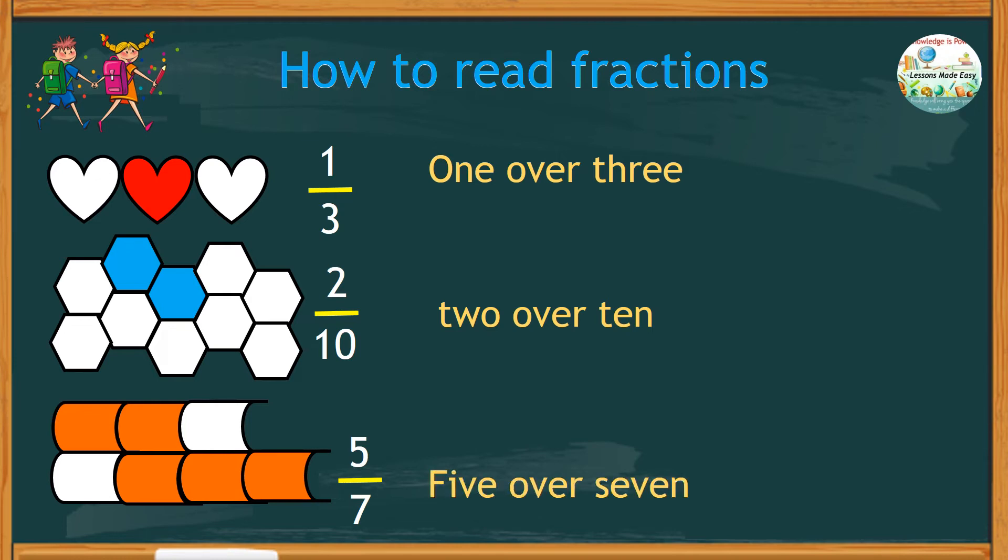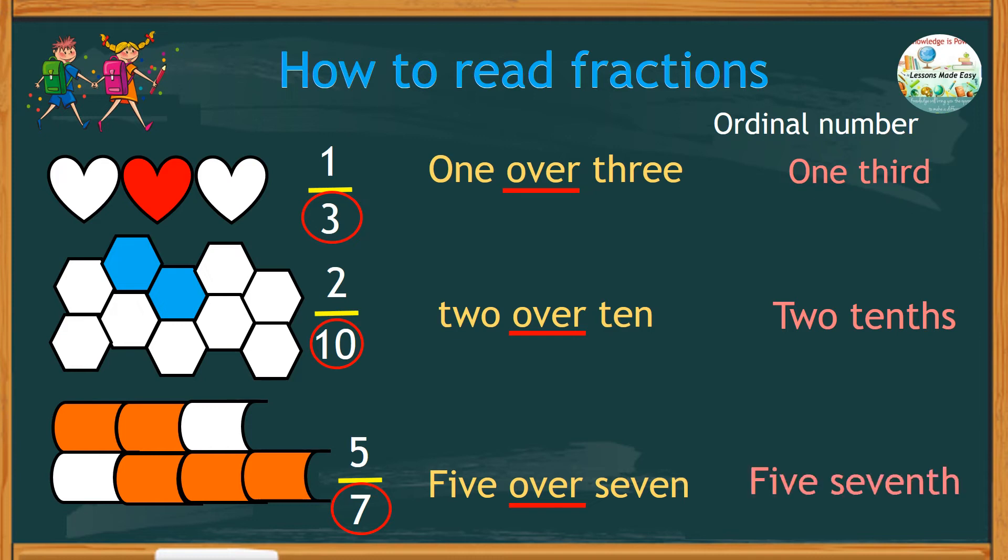Another way is to get rid of the word over and say the ordinal number of the denominator. Just like this: one-third, two-tenths, and five-sevenths.